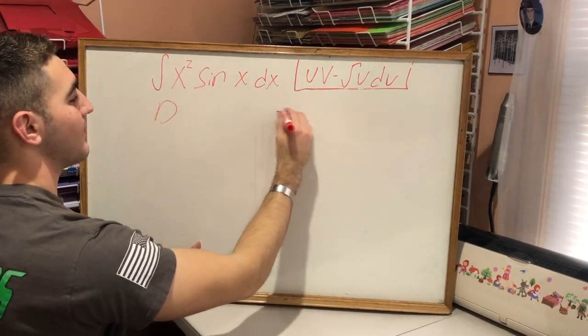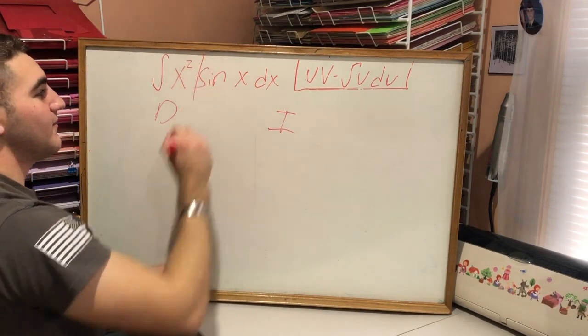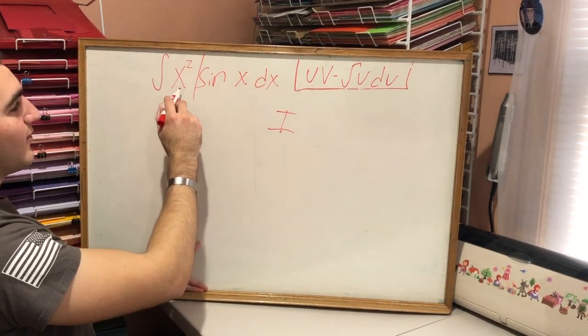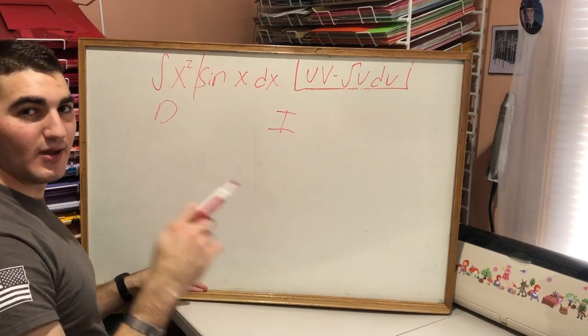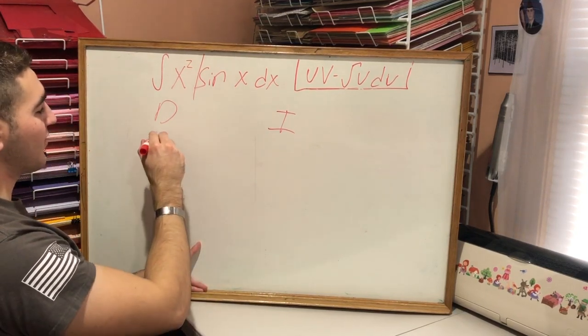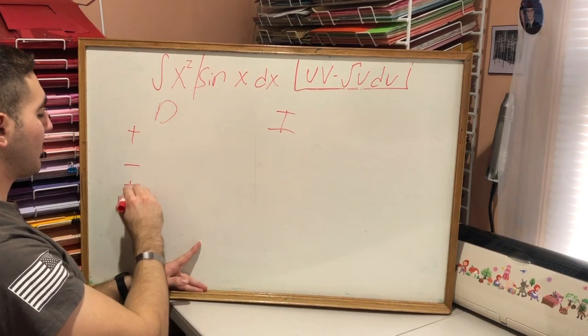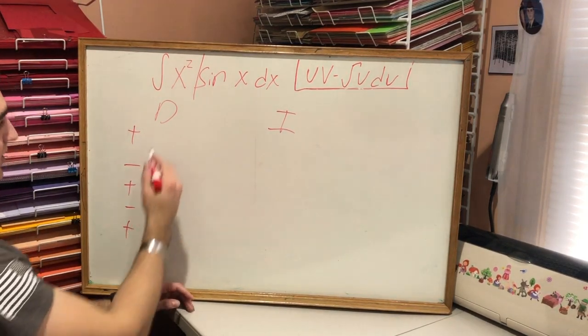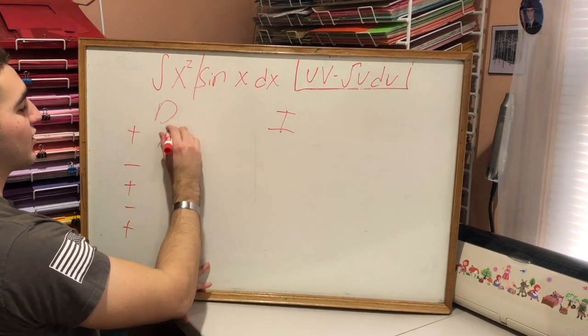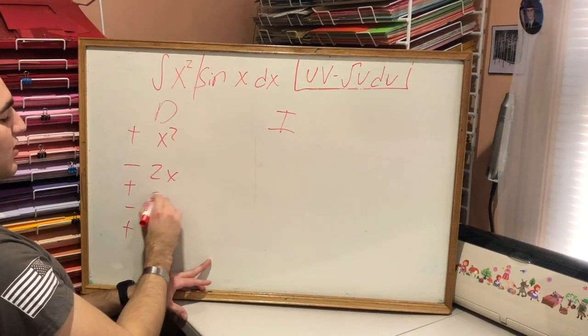We're going to use integration by parts using my method. We're going to take D, we're going to make it I, we're going to dissect it. And we're going to say we're going to derive. Whenever you see x squared or x to the fourth, it's usually going to be the one being taking the derivative of. So we're going to start off plus minus plus minus plus, make it just alternating, always starting with plus and alternating.